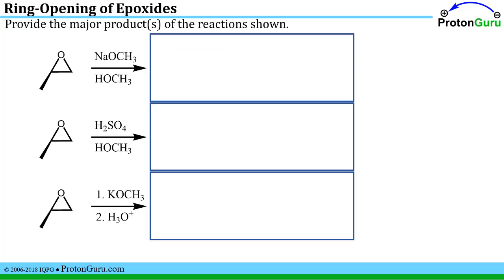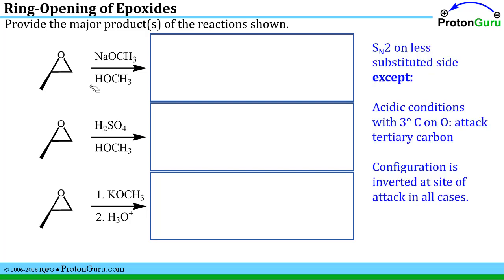A lot of the problems you'll likely face in your class involving the ring opening of epoxides will be to figure out the major products of different reactions. The side of the epoxide that gets attacked by the nucleophile depends on the conditions. As a general rule of thumb, you always want to do an SN2 reaction on the less substituted side, except in the case where you have acidic conditions and there's a tertiary carbon attached to the oxygen — in those cases the nucleophile attacks the tertiary carbon. Remember, whichever carbon gets attacked by the nucleophile has its configuration inverted, which is important when chiral centers are present.